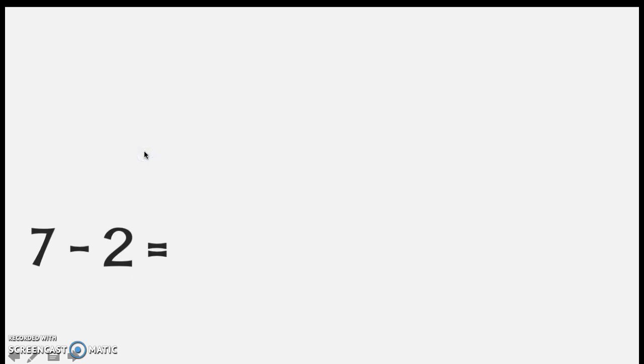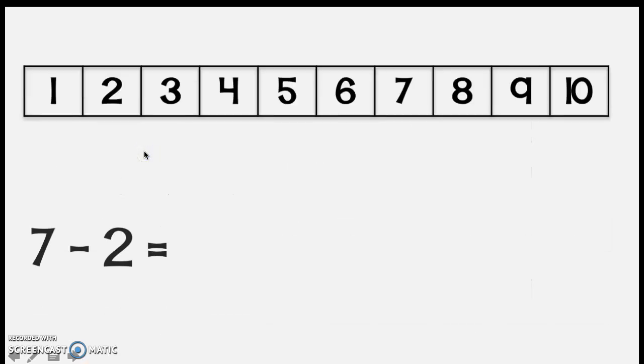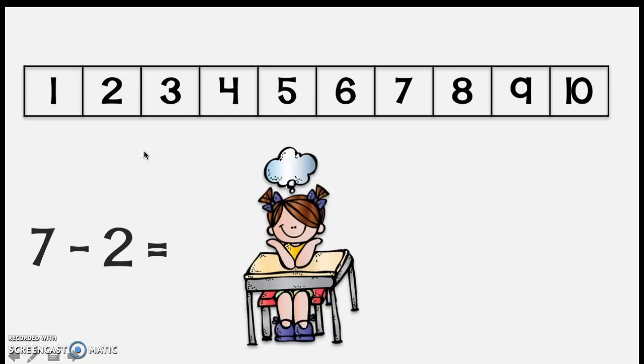What about this time I had 7 minus 2. There's my number path. All right I want to use good thinking to try to turn that into addition sentence. What do you think? What addition sentence could we do? Perfect. That's a good idea. Yeah I could say 2 plus something is equal to 5. All right so what number am I going to circle? Where am I going to start on my number path? Yeah totally. I'm going to start at 2 and I'm going to jump all the way up to perfect 7. Here we go.